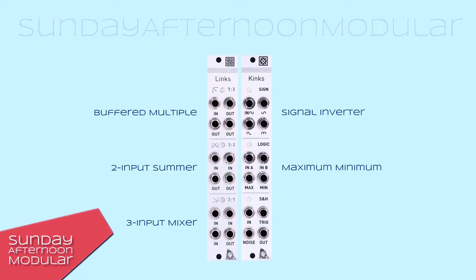The last one is a classic sample and hold section. On each trigger received on the trig input, the output voltage takes the value of the input voltage and holds this voltage. The signal input is normalized to a white noise generator to easily generate stepped random values. The white noise signal is also available through the noise output.